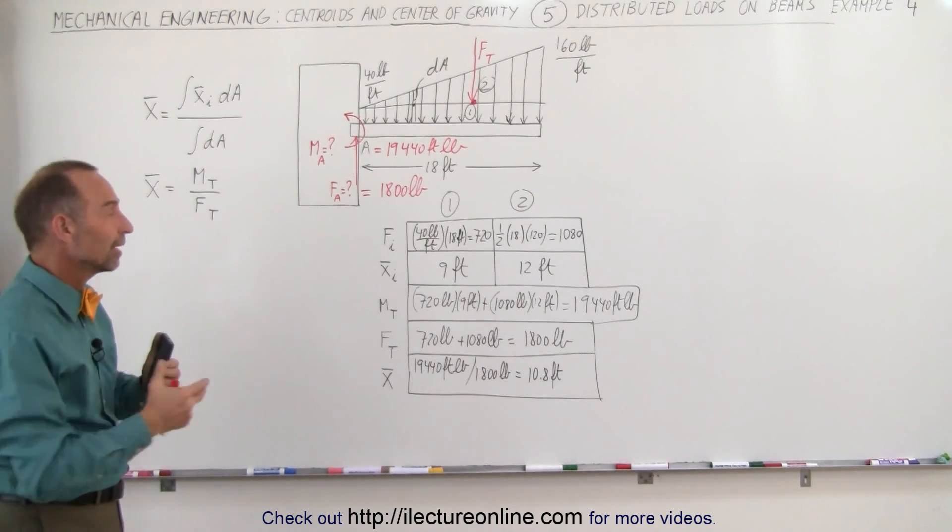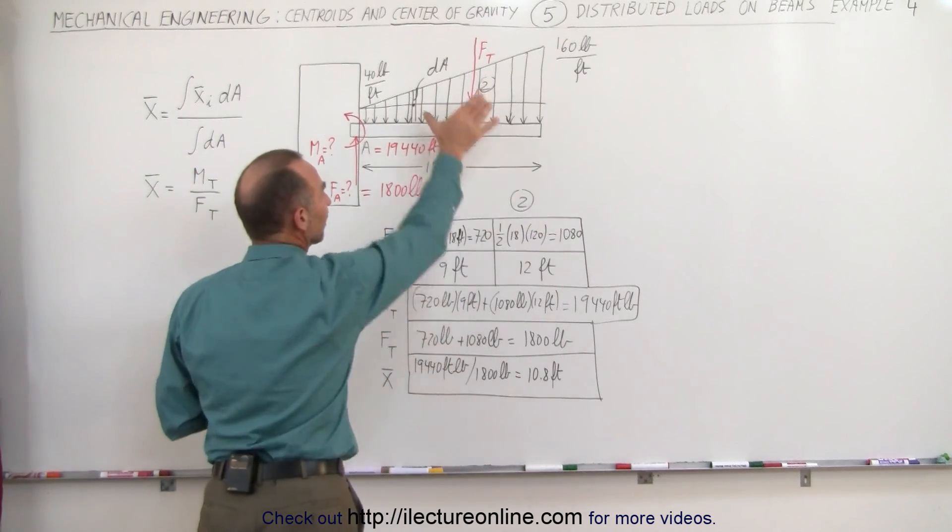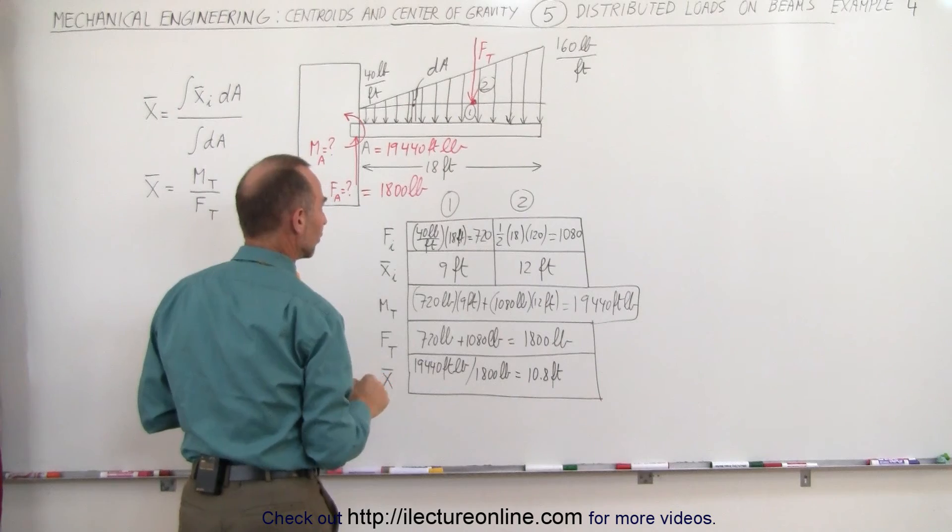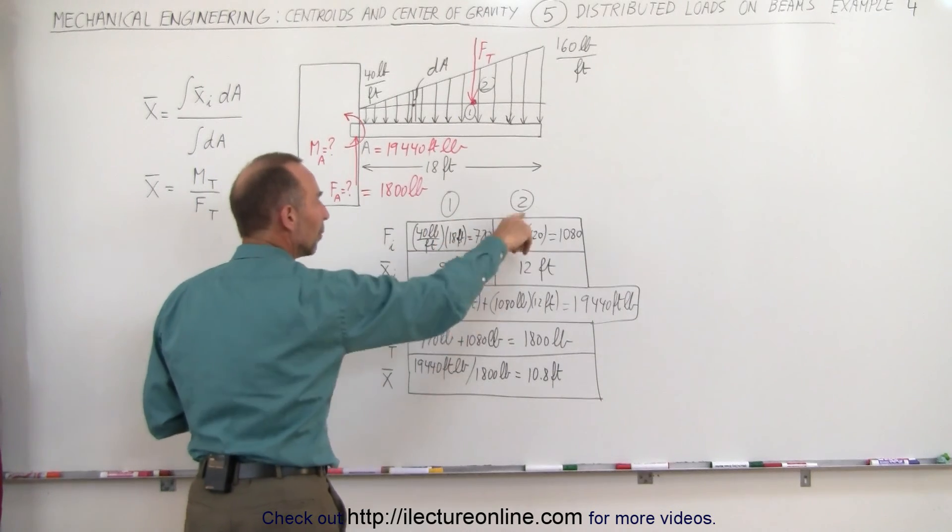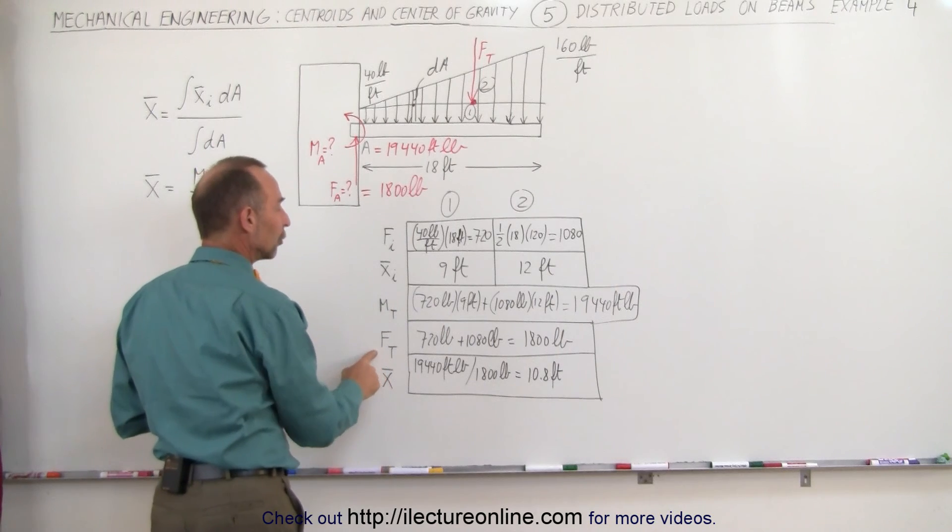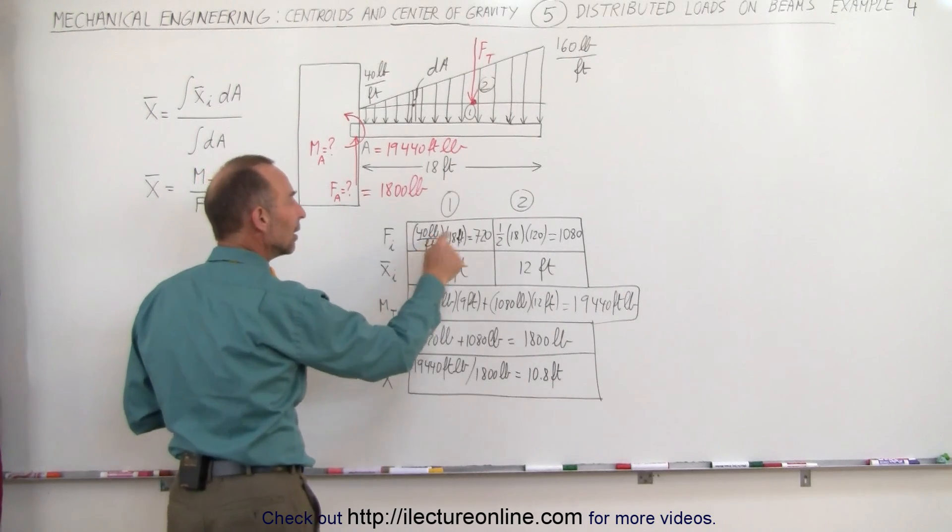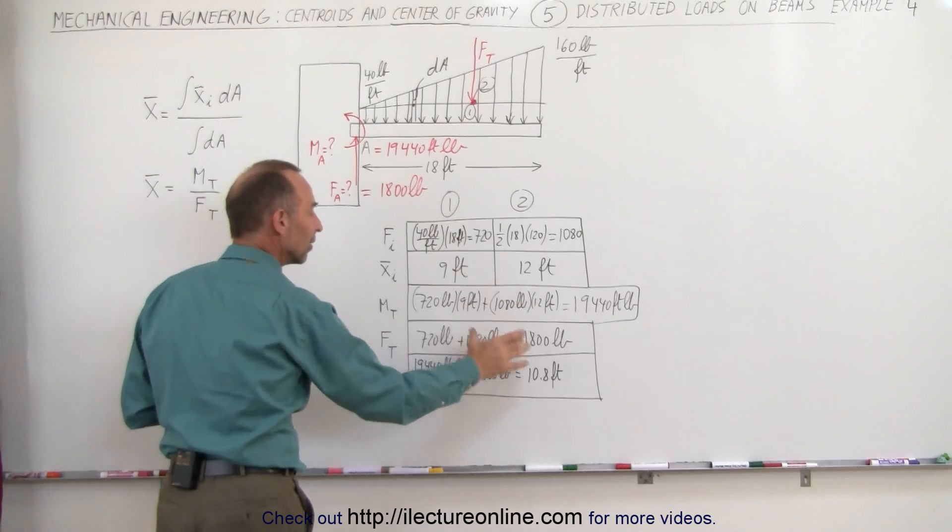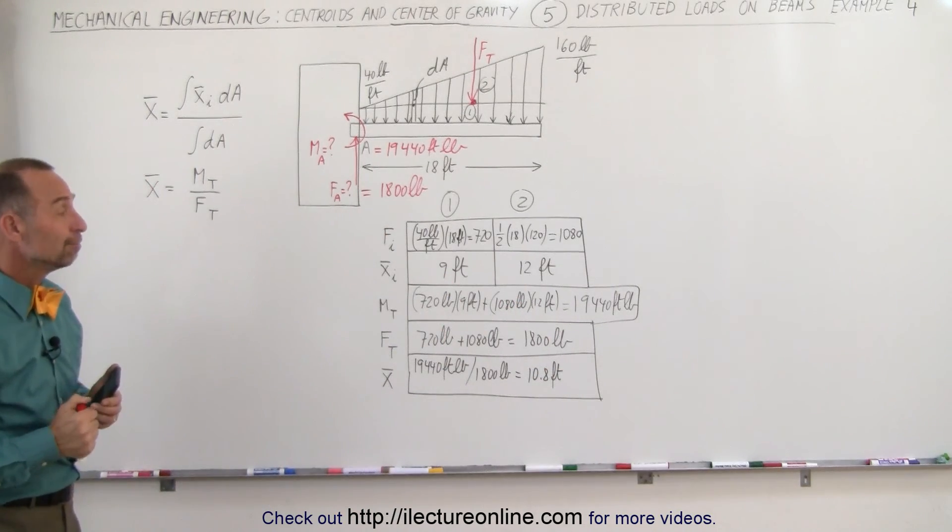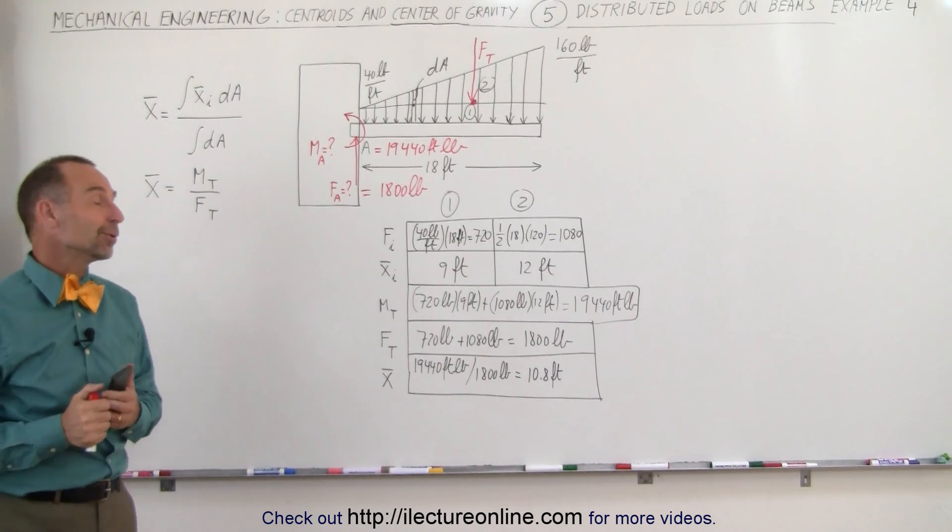See how much easier it is if we come up with a box like this. It really leads you through kind of a menu of things to do. Find the total force of each segment, then find the x-coordinate of the centroid of each segment. Multiply these together, add them all up for the total moment. Find the total force by adding up the individual four segments, then divide this by this to get the x-coordinate of the centroid of the complete load. Makes it a lot easier when we do it that way.